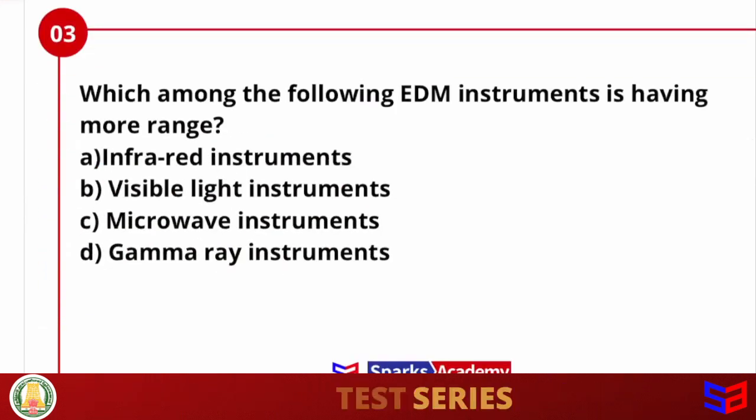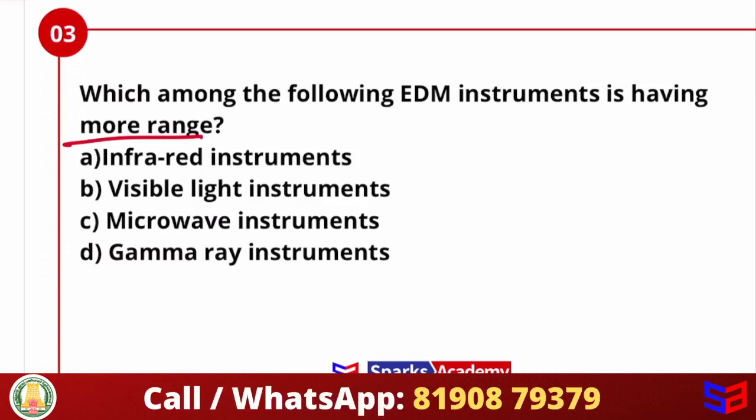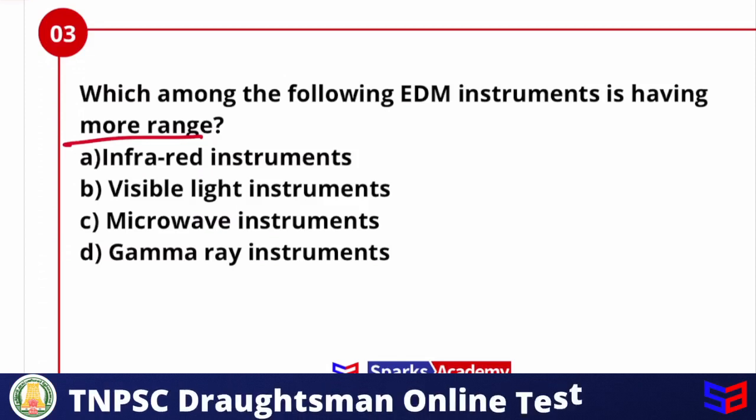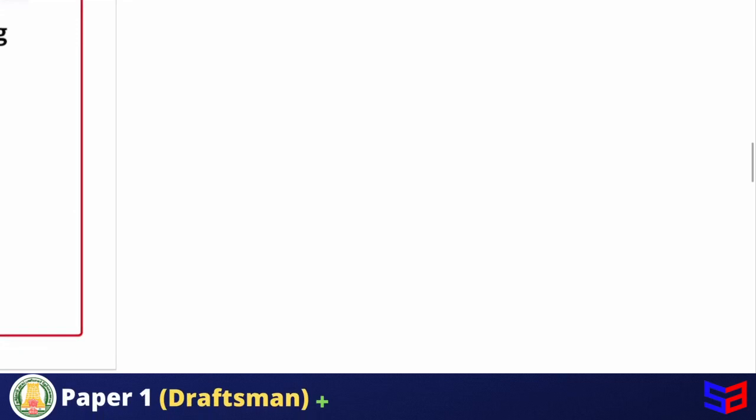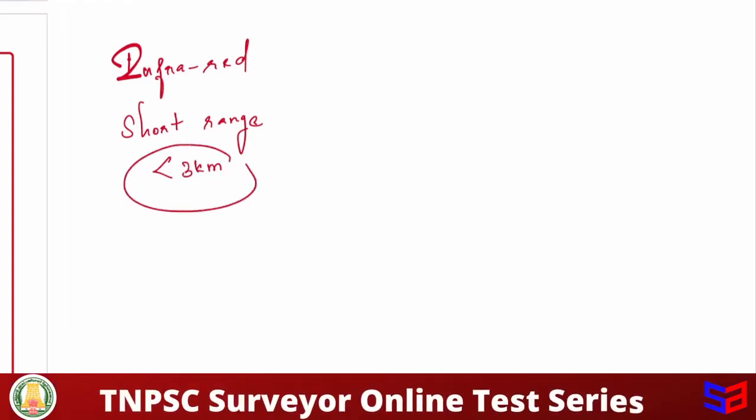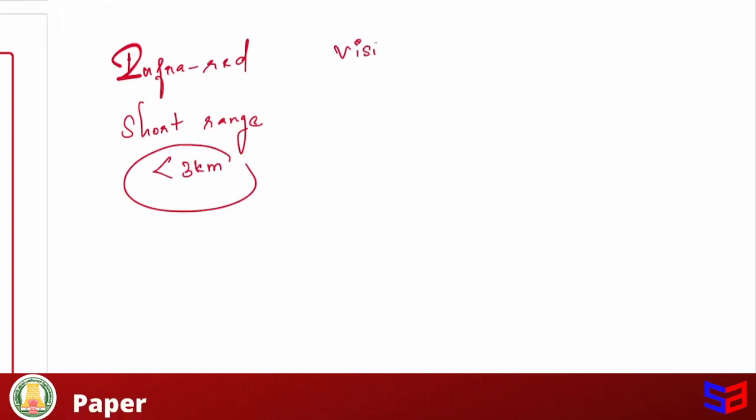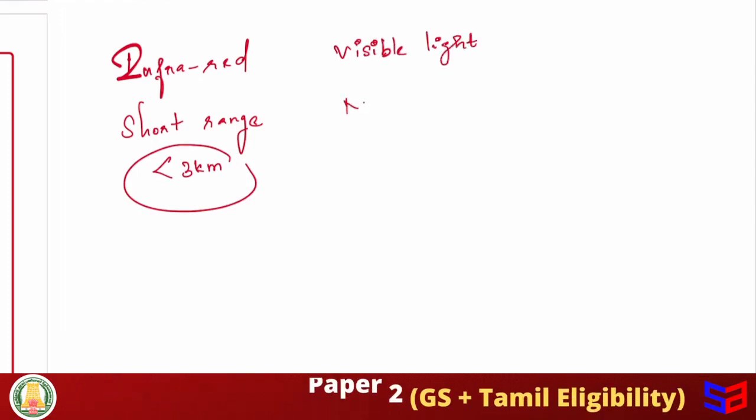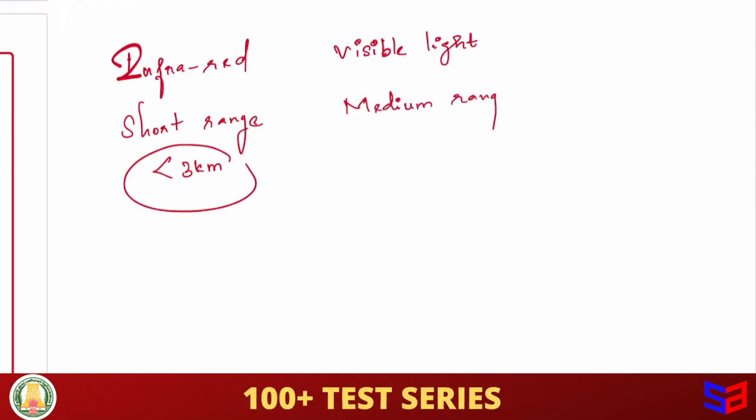Next question. Which among the following EDM instrument is having more range? So more range means maximum distance. Which EDM do we use? Infrared instrument or visible light or microwave or gamma ray instrument? So we already talked about carrier waves. For example, if we are going to use infrared instrument, that is for short range. Next, visible light. It is suitable for medium range.